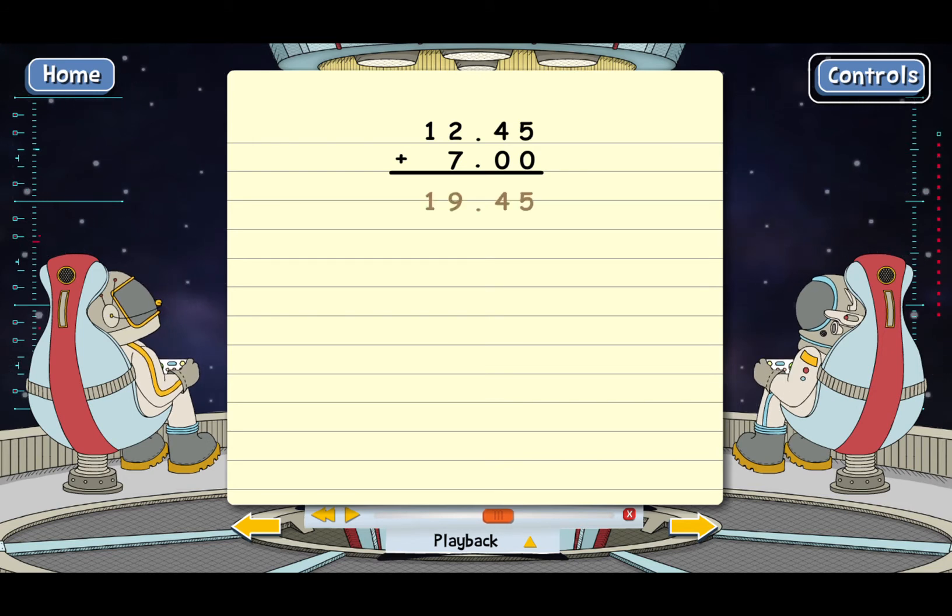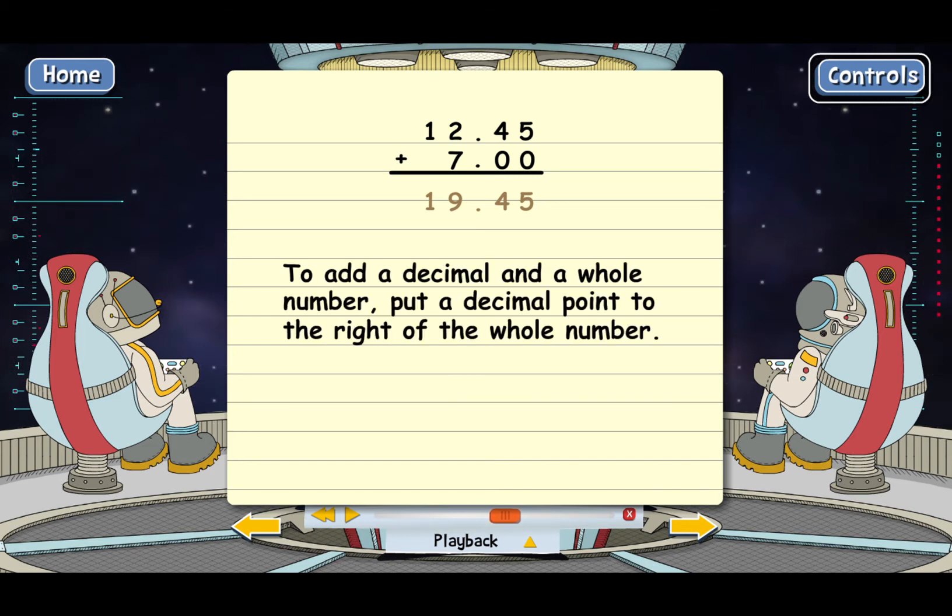So we end up with 19.45. That's the combined weight of the two packages. The main point is that when you add a decimal to a whole number, you need to put in a decimal point to the right of the whole number. That basically turns the whole number into another decimal. Then you can add in the usual way.